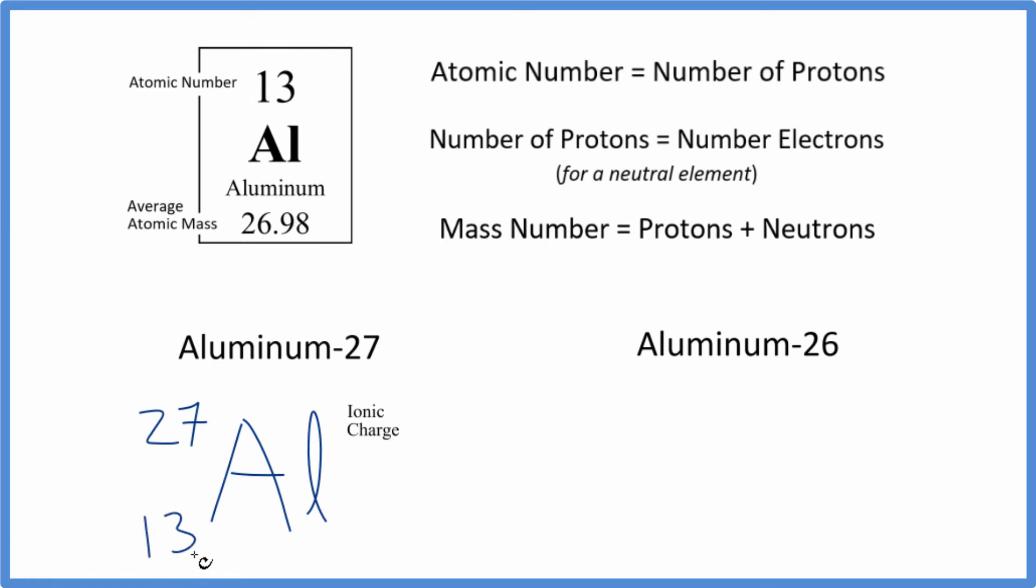That'll always be 13 for all its isotopes. And there's no negative or positive sign after the element symbol here on the periodic table. All the elements on the periodic table are neutral.